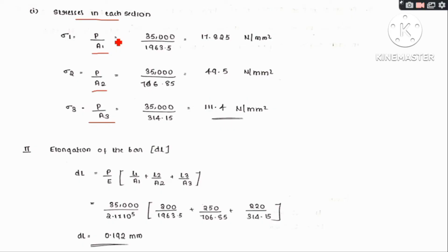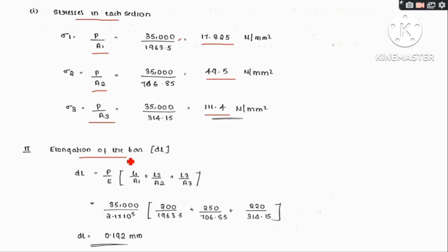Since the load is constant and acts on each area, we substitute all values. Sigma 1 = 17.825 N/mm², sigma 2 = 49.5 N/mm², and sigma 3 = 111.4 N/mm². For the total elongation, the change in length is calculated using delta L = P/E × (L1/A1 + L2/A2 + L3/A3), giving a total elongation of 0.192 mm.